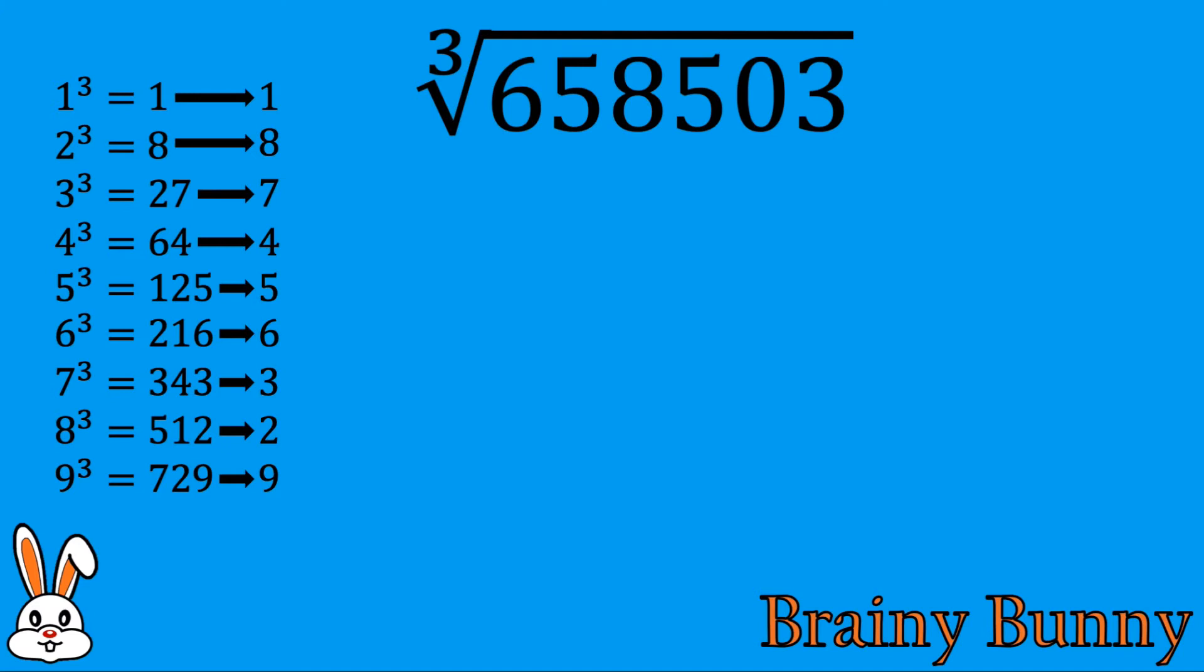Luckily there is a small trick here. So here it goes, 2 is the last digit of 8 cube and 8 is the last digit of 2 cube. Similarly, 3 is the last digit of 7 cube and 7 is the last digit of 3 cube. Easy enough, isn't it?